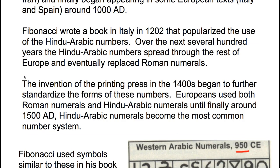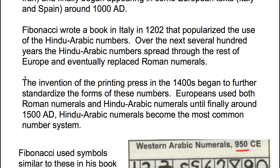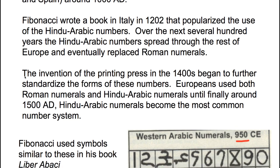It's the invention of the printing press in the 1400s that began to further standardize the forms of these numbers. They looked slightly different over this period, and as the printing press began to be used, they became more and more standardized. The Europeans used both the Roman numerals and the Hindu-Arabic Numbers until finally around 1500, the Hindu-Arabic Numbers were the most common number system.